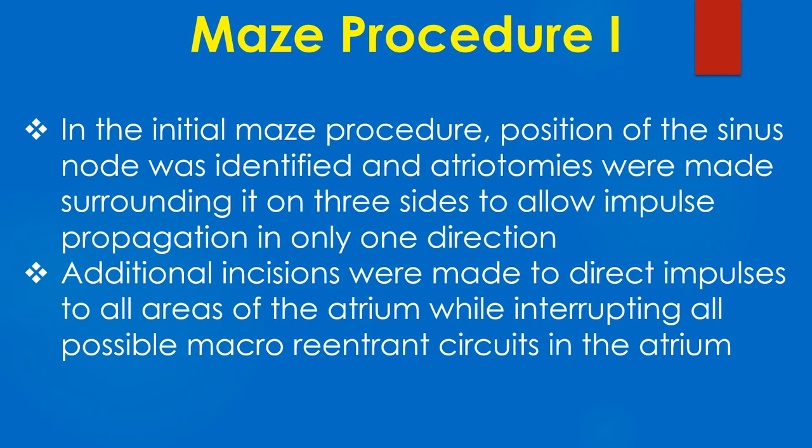In the initial Maze procedure, the position of the sinus node was identified and atriotomies were made surrounding it on three sides to allow impulse propagation in only one direction. Additional incisions were made to direct impulses to all areas of the atrium while interrupting all possible macro-reentrant circuits in the atrium.